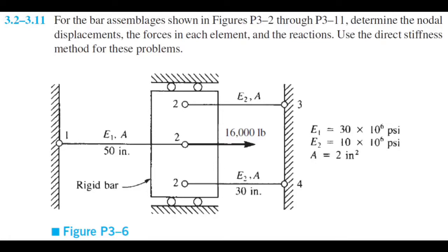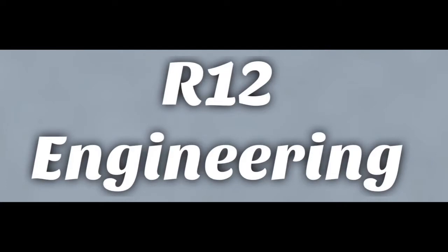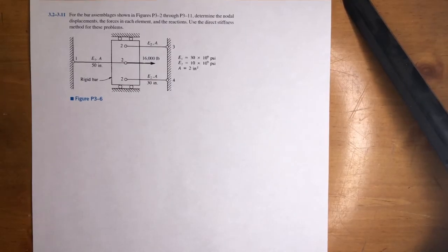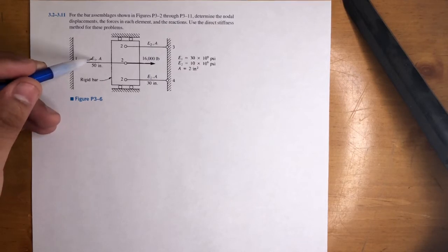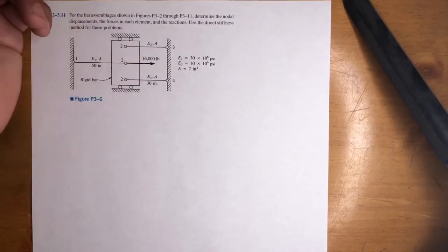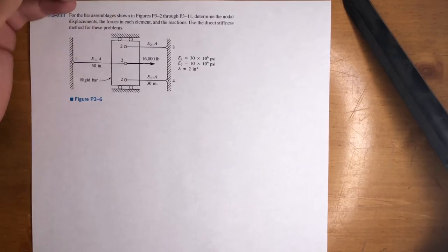Alright, what's going on y'all? Let's do 3-6. Determine the nodal displacements for this bar assemblage, the local element forces, and the reactions using the direct stiffness method. Let's go ahead and get started. Because we're dealing with two different properties of beams, we've got E1 and E2, and they give us the values right here. This is going to be a little bit more complicated, but we'll find a way to make it easy.